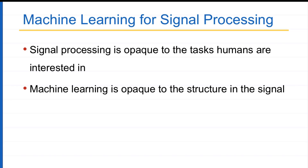On the other hand, machine learning is opaque to the structure in the signal. Machine learning is like a black box — you put in a lot of data, it crunches it based on training, and gives you some outputs — but it is opaque to the structure in the signal. If you just blindly feed in raw data mapping it to outputs, it will not give you the best performance. You have to design your algorithms based on the structure in the signal so they can generalize well with less data. The more structure you bring in, the more the algorithms will improve.